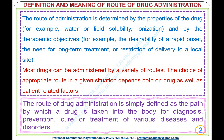Most drugs can be administered by a variety of routes. The choice of appropriate route in a given situation depends on both the drug and patient-related factors. The route of drug administration is simply defined as the path by which a drug is taken into the body for diagnosis, prevention, cure, or treatment of various diseases and disorders.